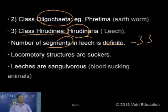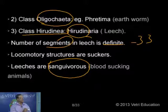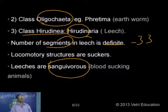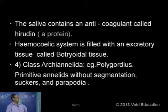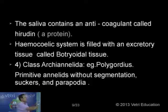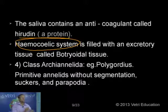The locomotory structures are suckers — anterior sucker and posterior sucker. Different types of feeding or nutrition: one type is called sanguivorous mode of feeding — the blood eaters. Just like carnivore, herbivore, omnivore — here leeches are sanguivorous, meaning they are blood-feeding animals. They have a haemocoelic system where the coelomic cavity filled with coelomic fluid interconnects with the circulatory system in leeches.